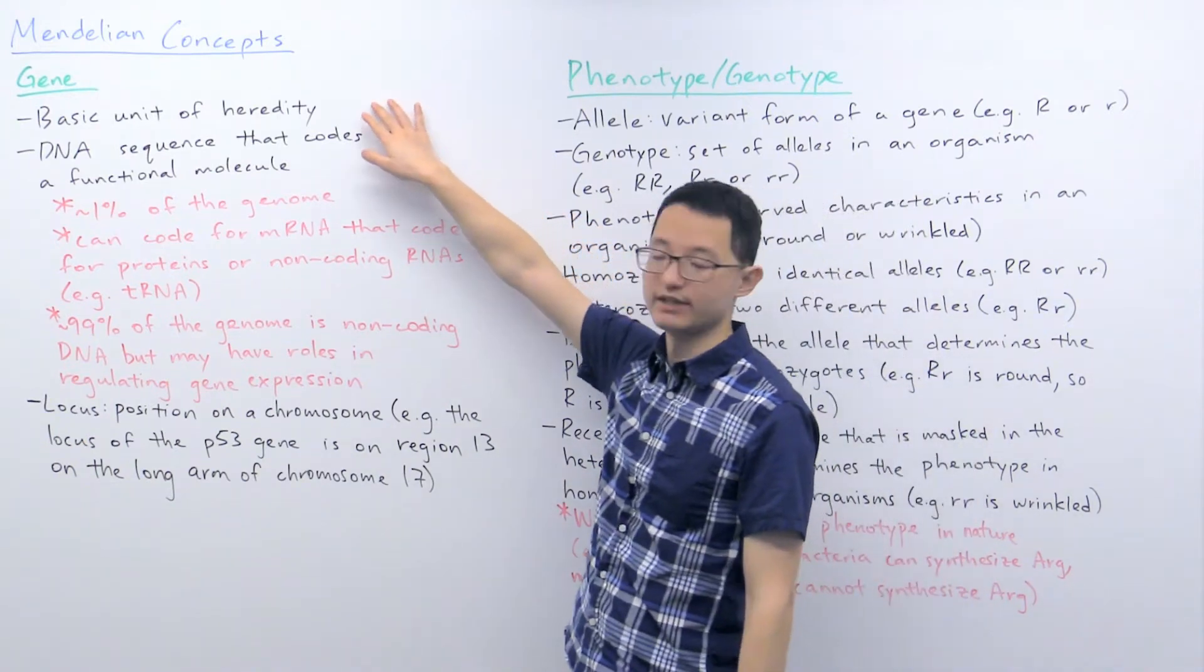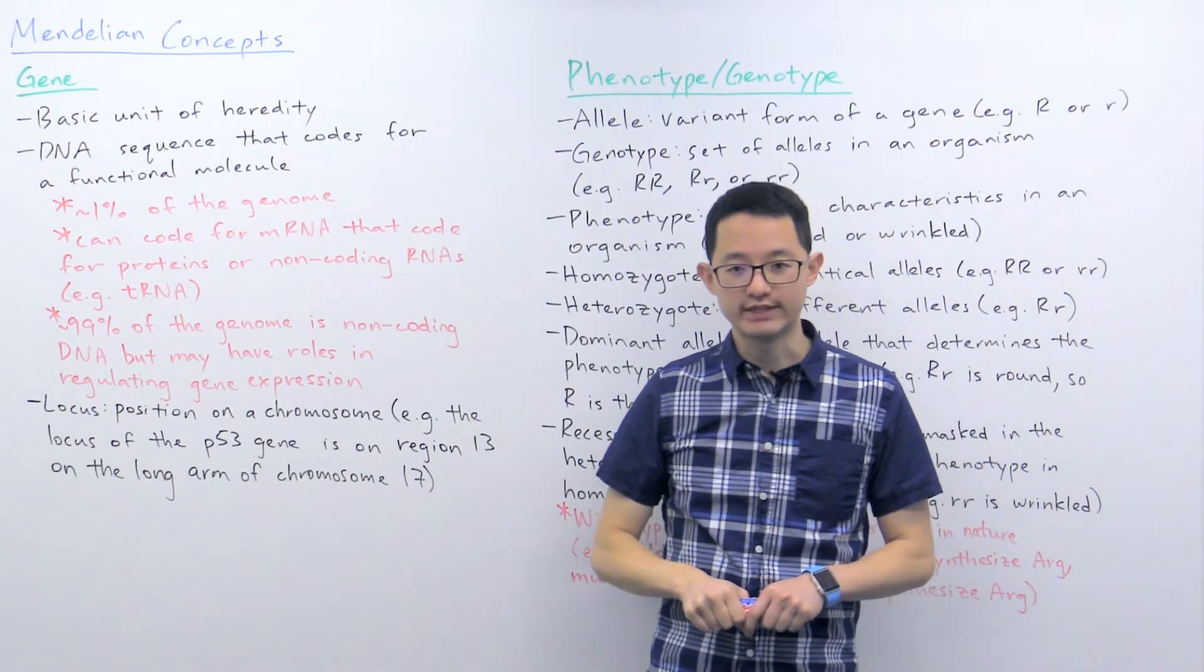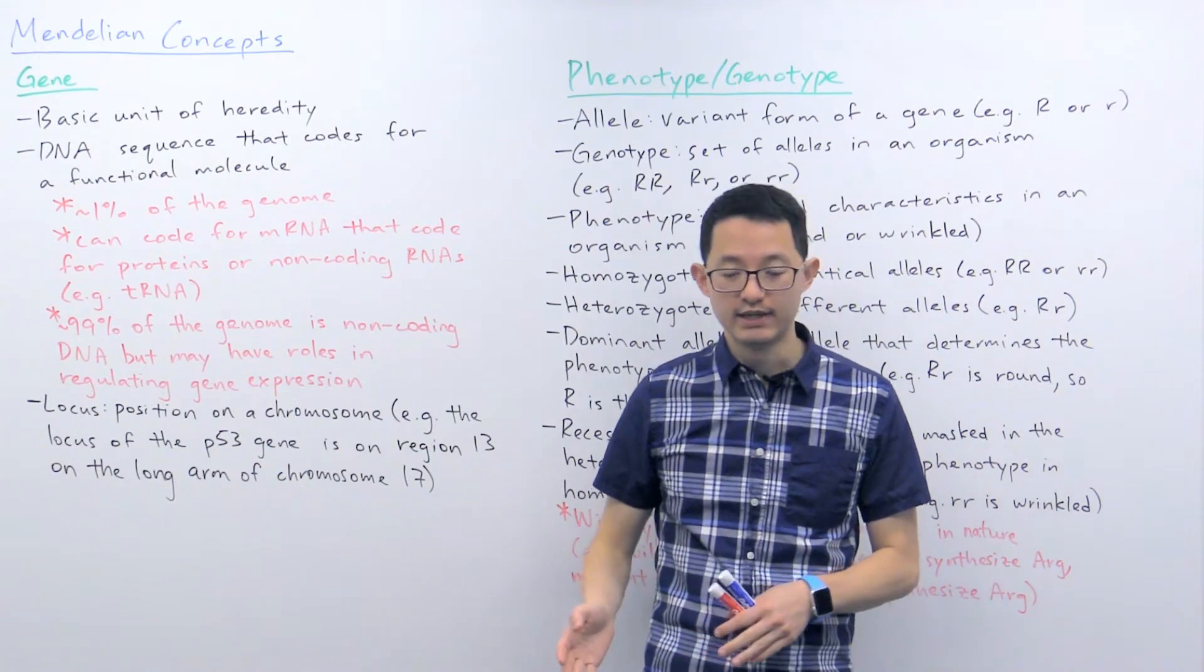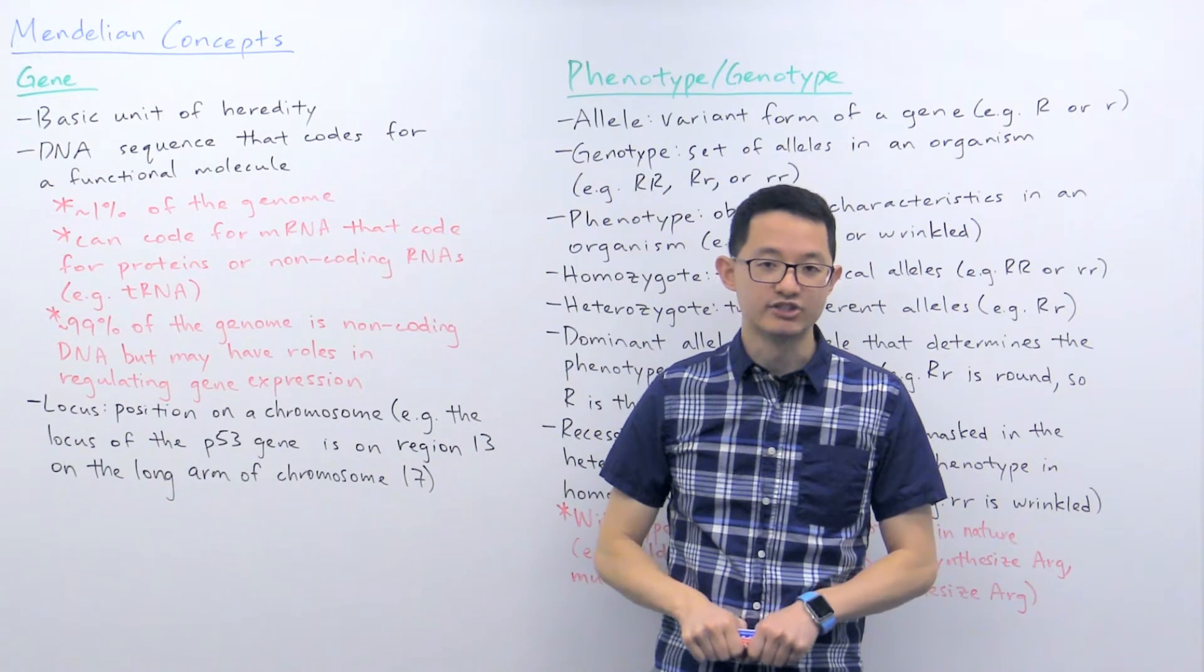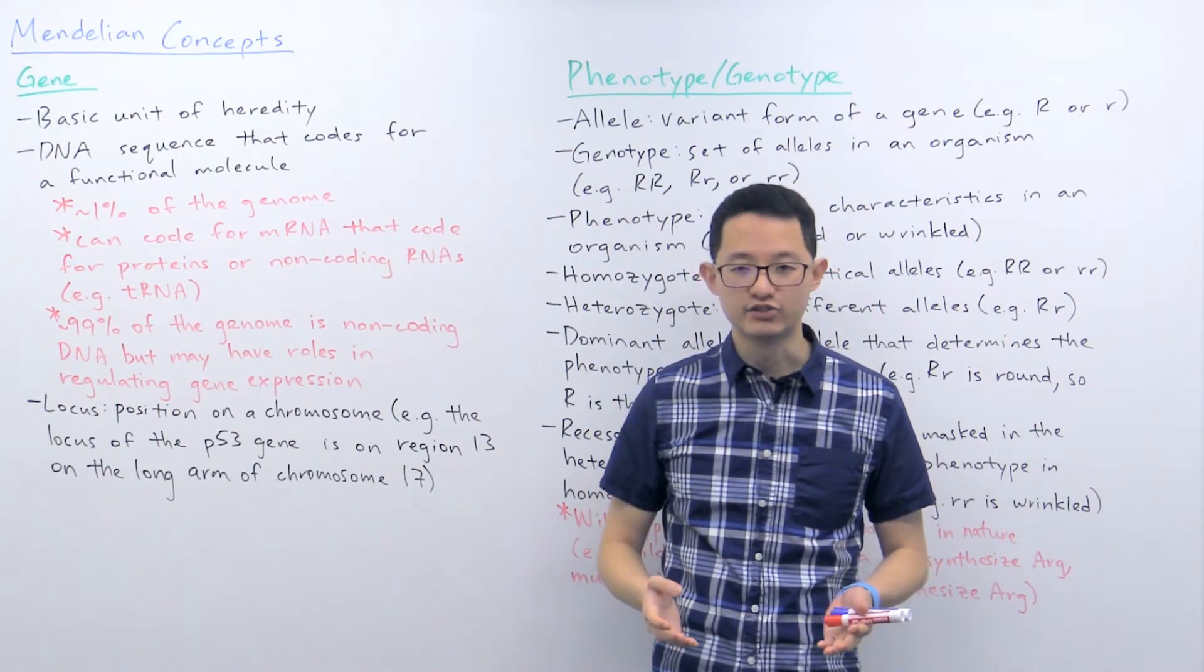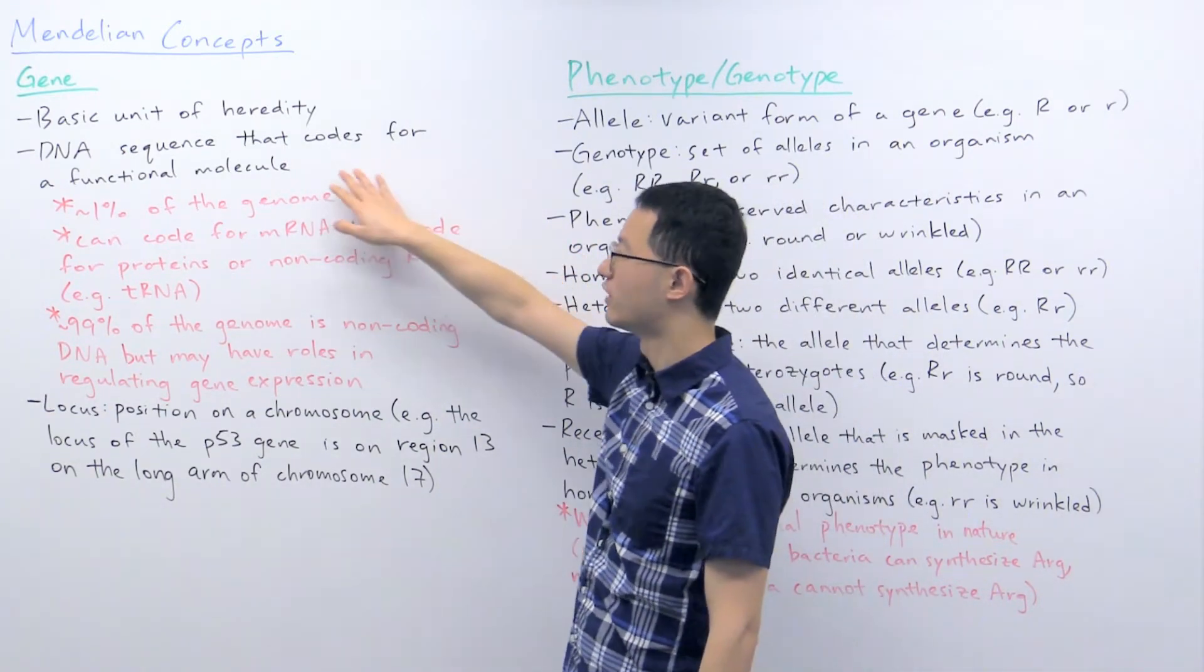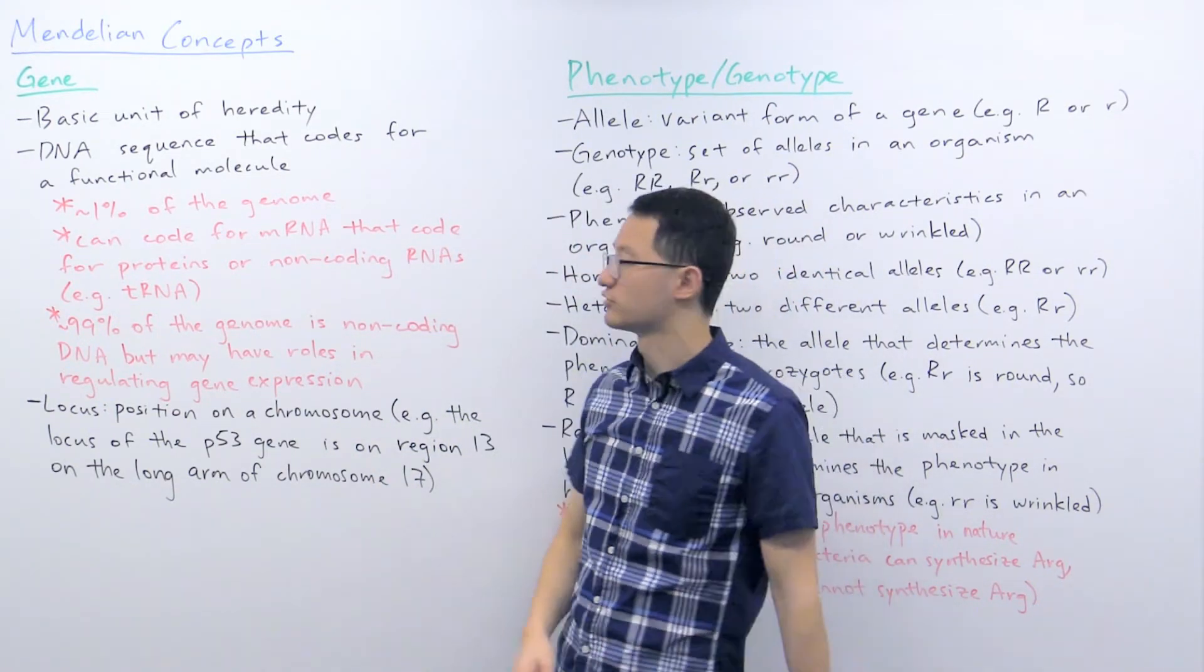Genes are the basic unit of heredity. In order for an organism to pass on its traits to its offspring, it has to pass on its genes to its offspring. As you recall in our last video, we discussed how DNA is the genetic material in cells. So genes is essentially referring to DNA sequences. Specifically, genes are DNA sequences that code for a functional molecule.